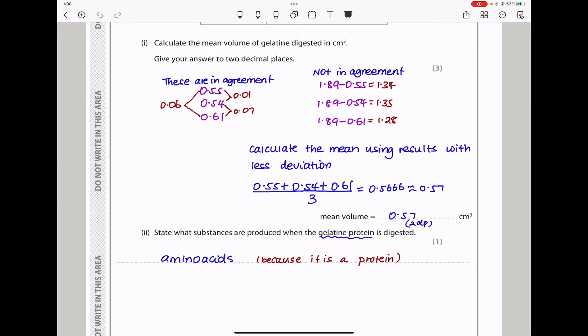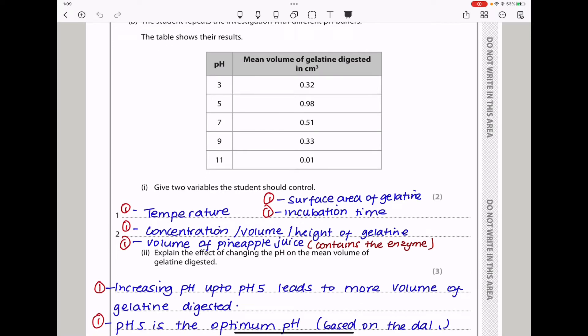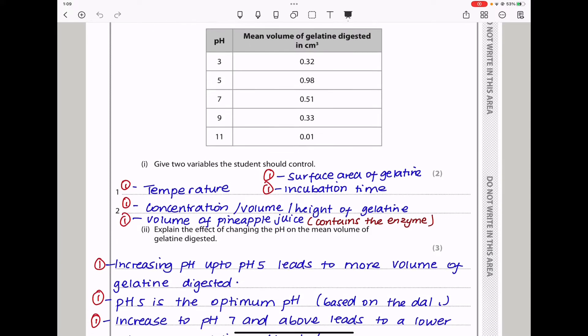The next part says what substances are produced when gelatin protein is digested. Because this is a protein, digestion is going to lead to production of amino acids. The student repeats the investigation with different pH buffers. The table shows their results. They say give two variables the student should control. When you're changing pH, of course, the temperature has to be controlled. The concentration or the volume or the height of gelatin has to be controlled. The volume of the pineapple juice has to be controlled as well. The surface area of the gelatin has to be controlled. Incubation time. There are so many things you would have written here.